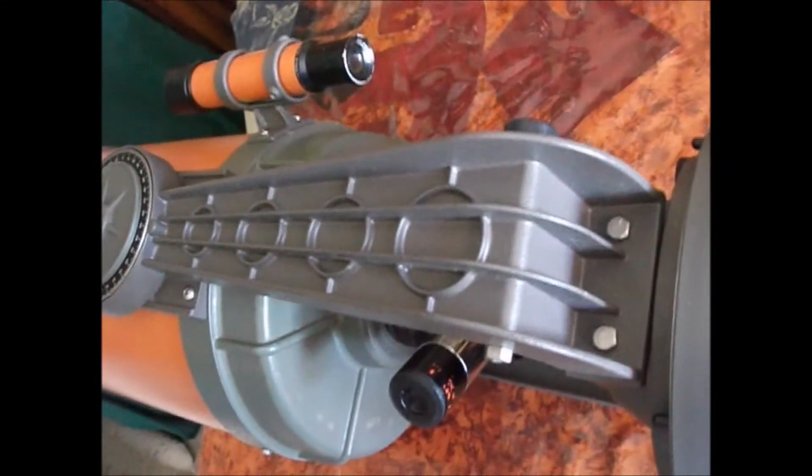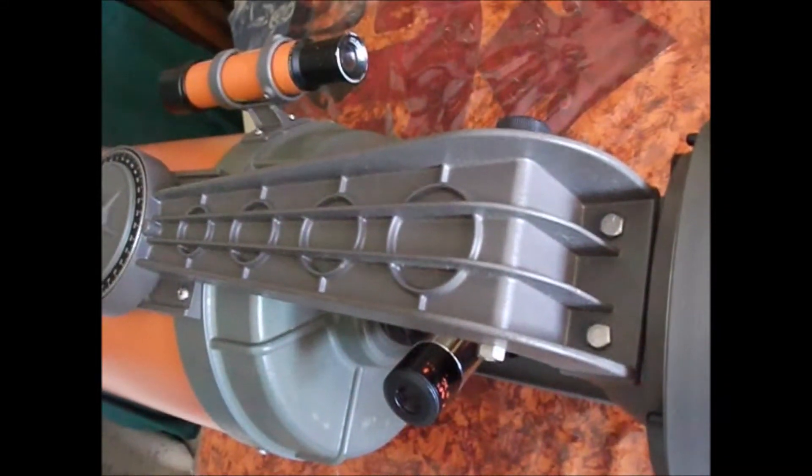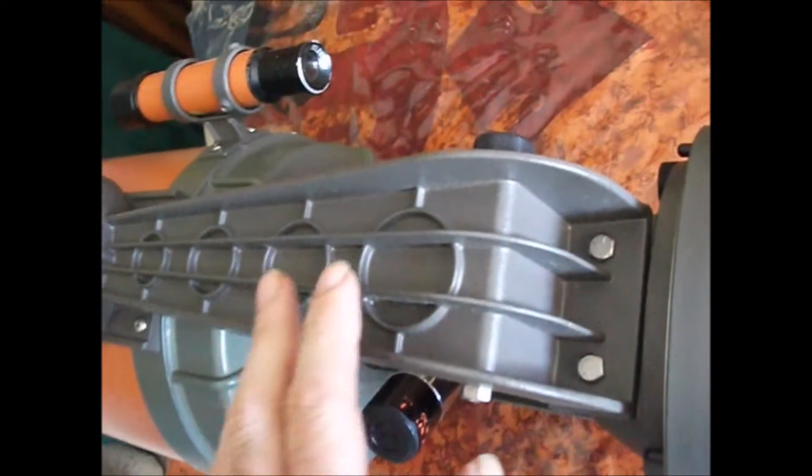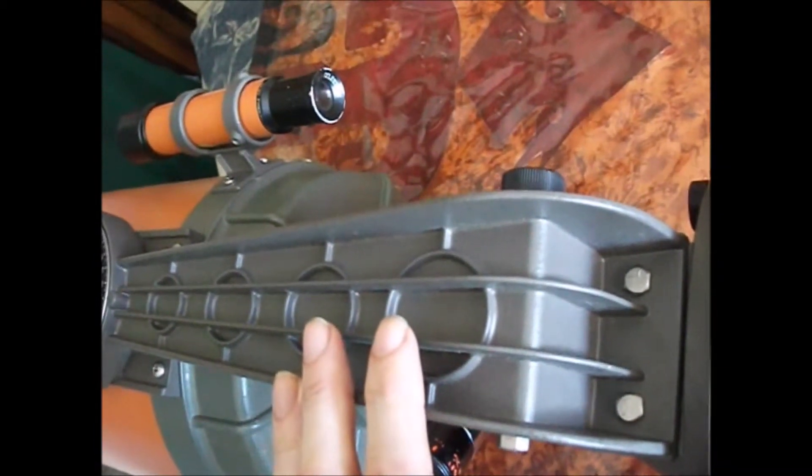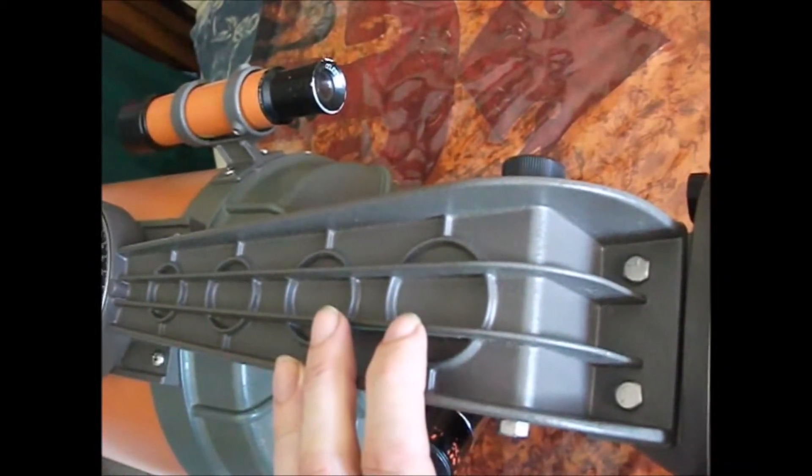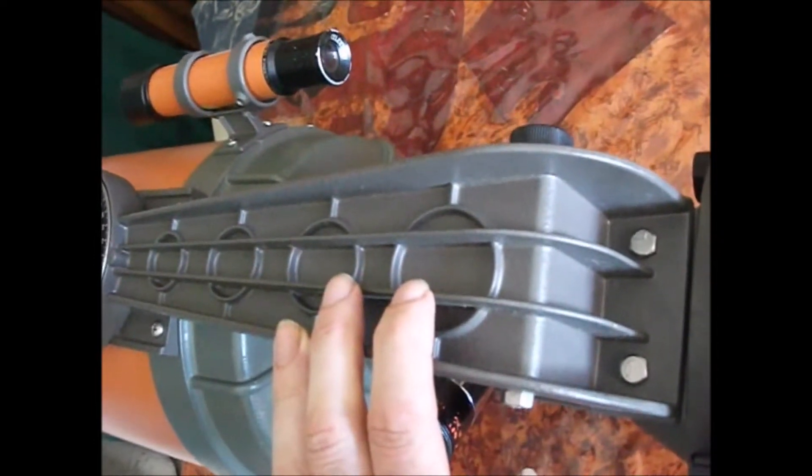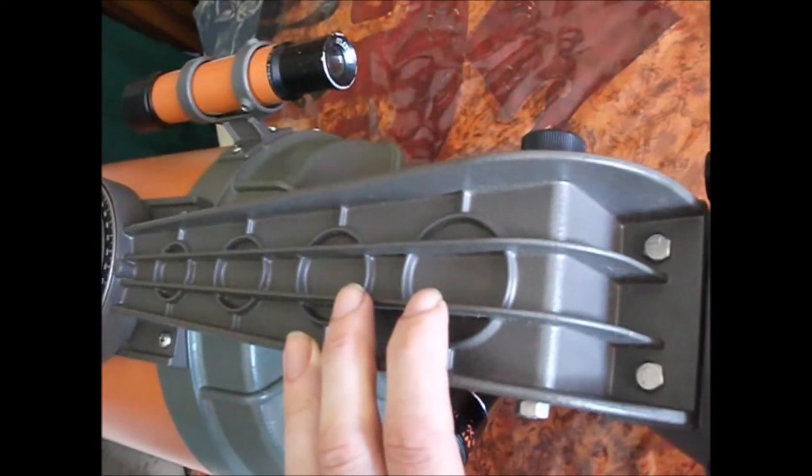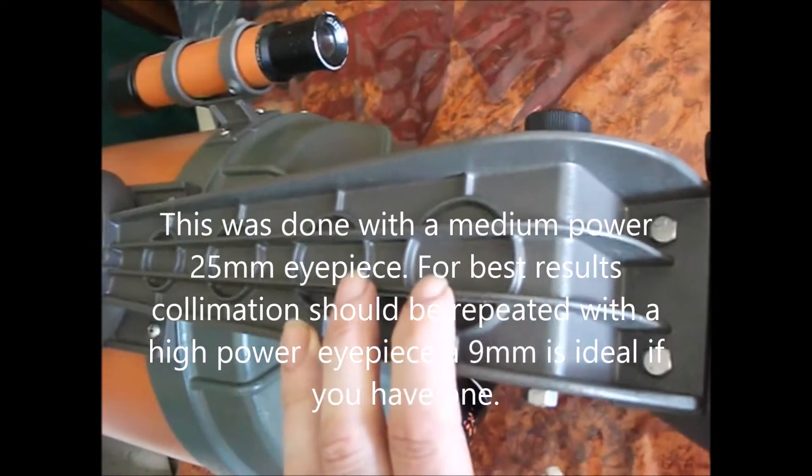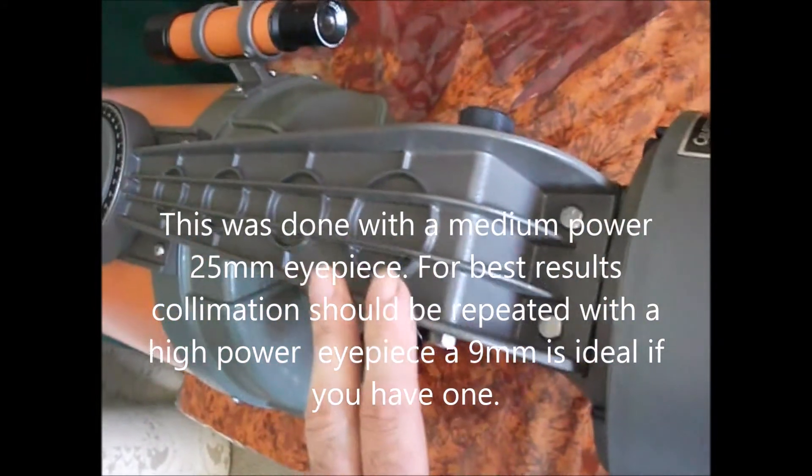This video outlines the basic steps in collimating a Cassegrain telescope. You can do it simply by pointing the telescope at a small light source. You can even use a flashlight mounted on a fence at nighttime, at least 50 yards away.